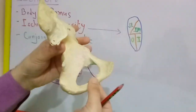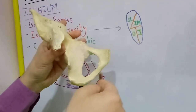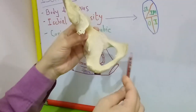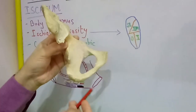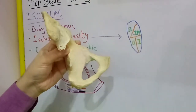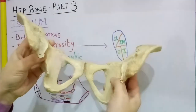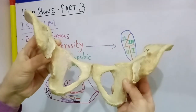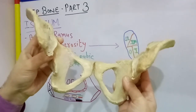The conjoint ischiopubic ramus has an upper border, lower border, outer surface, and inner surface. The lower border of the conjoint ischiopubic ramus forms the sub-pubic angle or pubic arch with the similar bone of the opposite side. This angle formed is known as the sub-pubic angle.